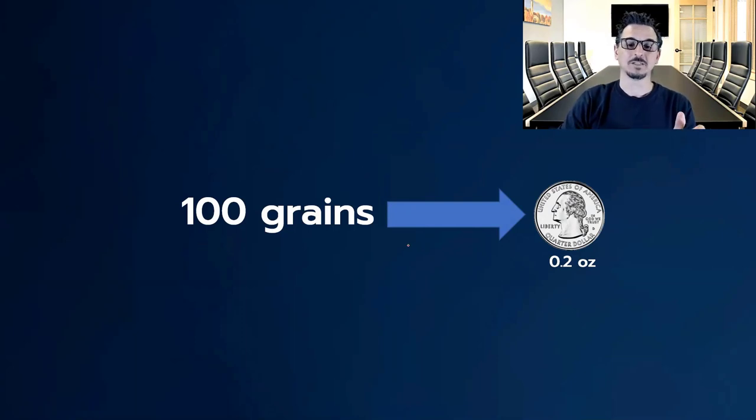A hundred grains, as far as weight goes, is about 0.2 ounces. So if you're thinking of a hundred grains, think of a quarter.